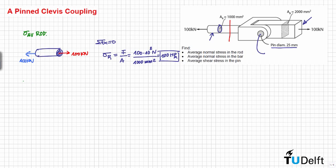We can do the same for the bar. We can cut here and we have this. We have here this point load of 100 kN, and of course then the internal reaction force is equal to 100 kN as well.